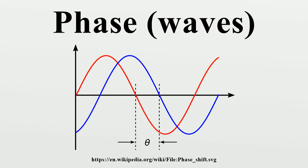Phase shift is any change that occurs in the phase of one quantity, or in the phase difference between two or more quantities. Phase shift is sometimes referred to as phase offset because it represents a shift from zero phase.